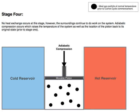The PV diagram of the reversed Carnot cycle is the same as for the Carnot cycle except that the directions of the processes are reversed.